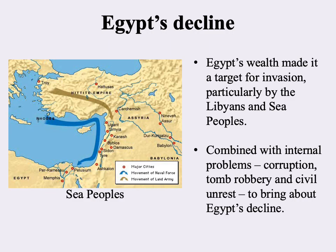From this point forward it's pretty much a story of decline for the ancient Egyptians. Their wealth made them a target for invasion. Two peoples in particular gave them a hard time: the Libyans in roughly modern-day Libya, and another people historians refer to as the Sea Peoples — we're not really sure who they were, but they were frequently attacking the Egyptians by sea. There were also internal problems like corruption, tomb robbery, and eventually civil unrest, until Egypt would be conquered by various peoples, with its independence finally brought to an end by Alexander the Great.